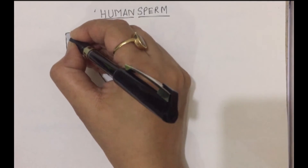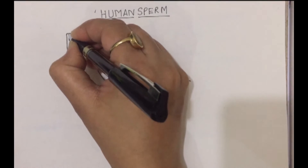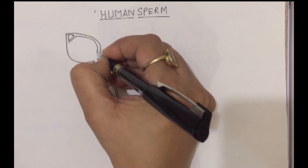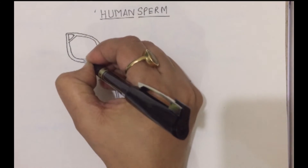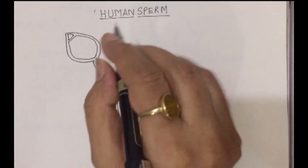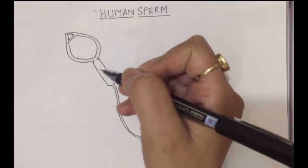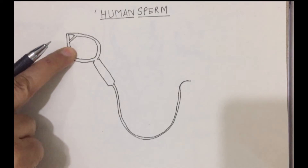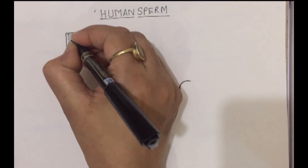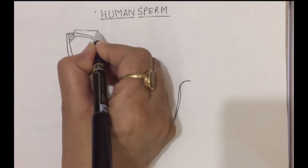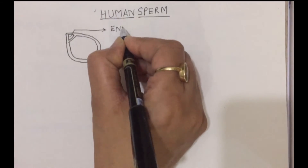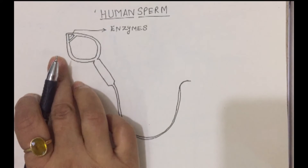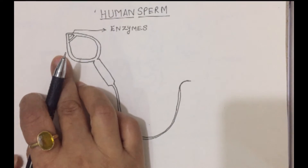Now this is not all. In the head you have a triangular portion present here and a nucleus. These are the enzymes. Enzymes — why enzymes? Because the sperm has to travel through the vaginal passage and make its way.